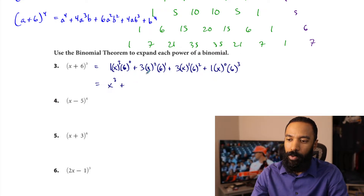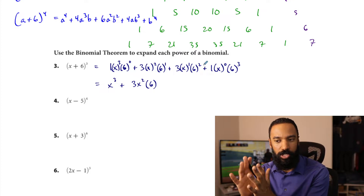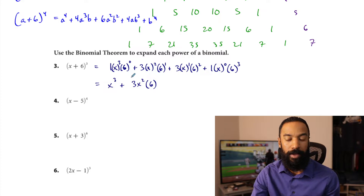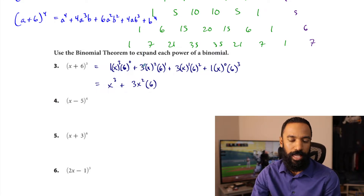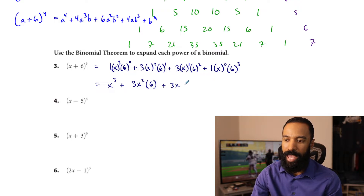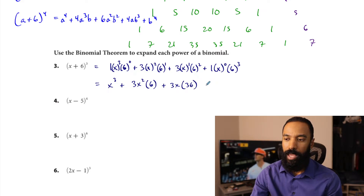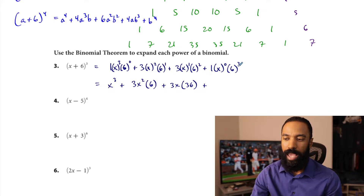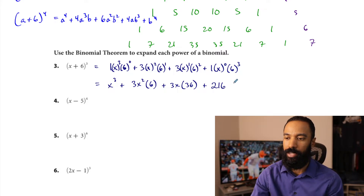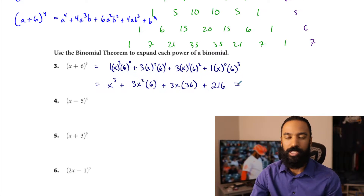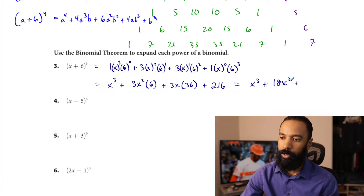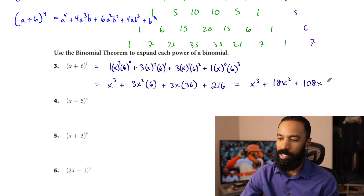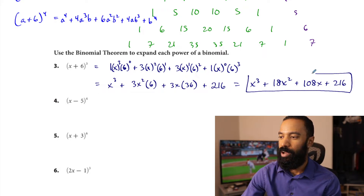Cleaning it up: one times one is just x cubed. This next one: three x squared gets multiplied by six, so three times six is 18. Then three times x times six squared — that's 36 — so three times 36 is 108. And lastly, one times x to the zero is one, and six cubed is 216. So we end up with x cubed plus 18x squared plus 108x plus 216. That is the expansion of x plus 6 cubed.